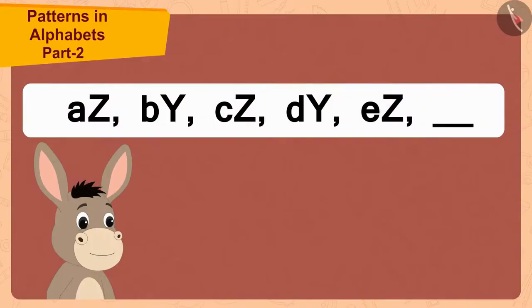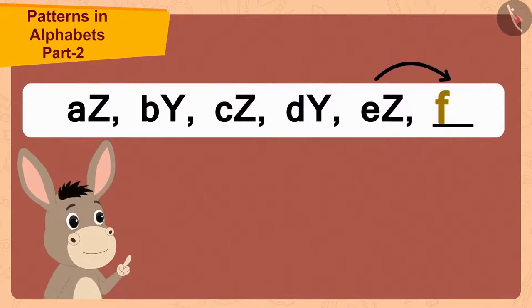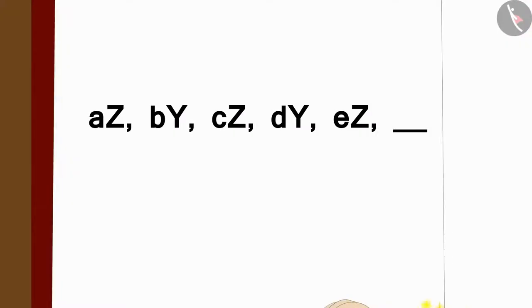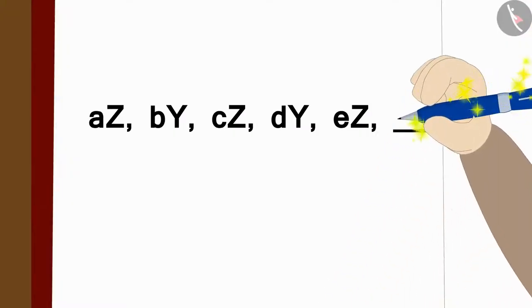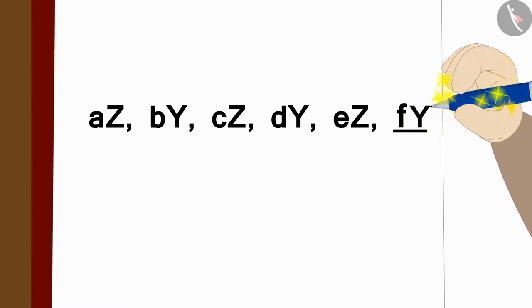So, the next two letters in this pattern will have the smaller letter F next to E, and the capital letter Z followed by Y. Bola quickly wrote these letters F-Y in the blank space from that magical pen.